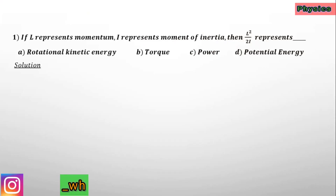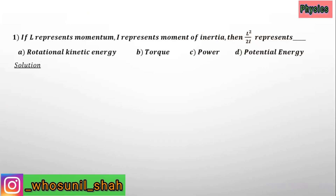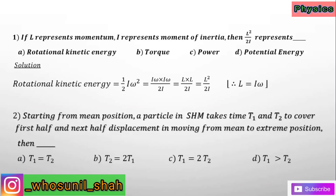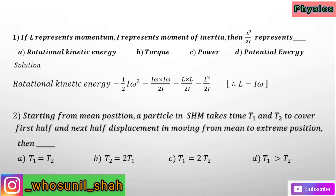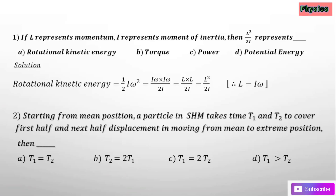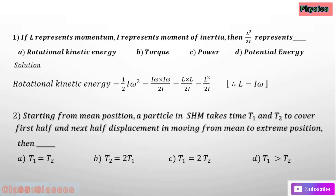We have L squared by 2I, where L represents angular momentum and I represents moment of inertia. You have to remember that rotational kinetic energy equals half I omega squared. Then you can write it as I omega into I omega by 2I. Remember the formula L equals I omega, and you'll get L squared by 2I.